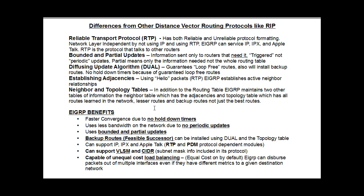These routes in the topology table have to be loop-free routes. They're often called the neighbor database or topology database. EIGRP maintains three databases or three tables: the routing table, the neighbor table, and the topology table, which has all of the routes, including the backup routes.